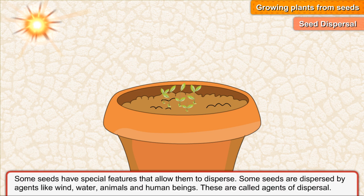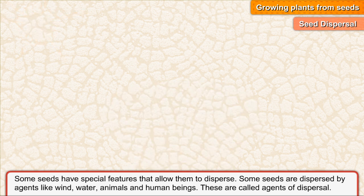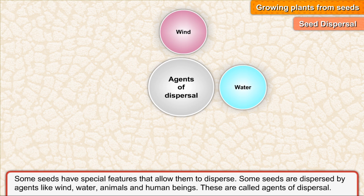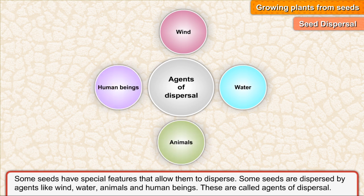Some seeds have special features that allow them to disperse. Some seeds are dispersed by agents like wind, water, animals and human beings. These are called agents of dispersal.